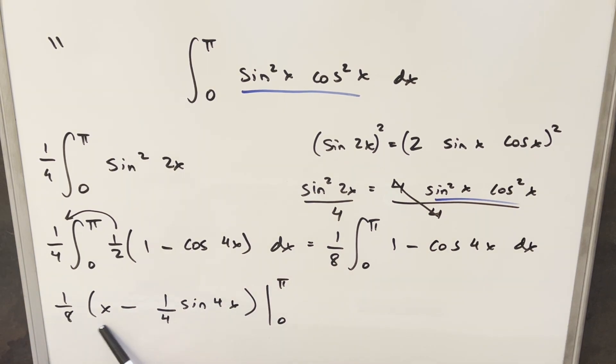Well, evaluating at 0, everything here is going to be 0. So we really just need to plug pi into this. We'll have our 1 eighth up front. Plugging pi in for x, we just have pi. Minus 1 fourth sine 4, plugging in pi. So this is going to be sine 4 pi. But sine at 4 pi is going to 0. So multiplying into 1 eighth for our final solution, we just get pi over 8.